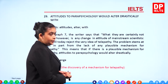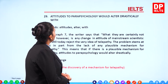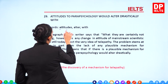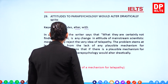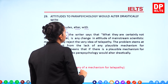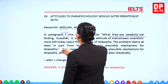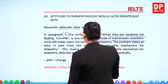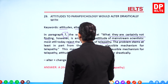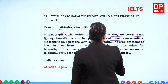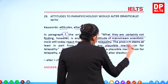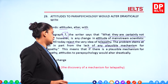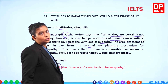Question 29: 'Attitudes to parapsychology would alter drastically with...' In paragraph 7, the writer says mainstream scientists today reject the idea of telepathy, and the problem stems at least in part from the lack of any plausible mechanism for telepathy. So if a plausible mechanism were found, attitudes would obviously change drastically. The answer is A. 'Alter' means to change.